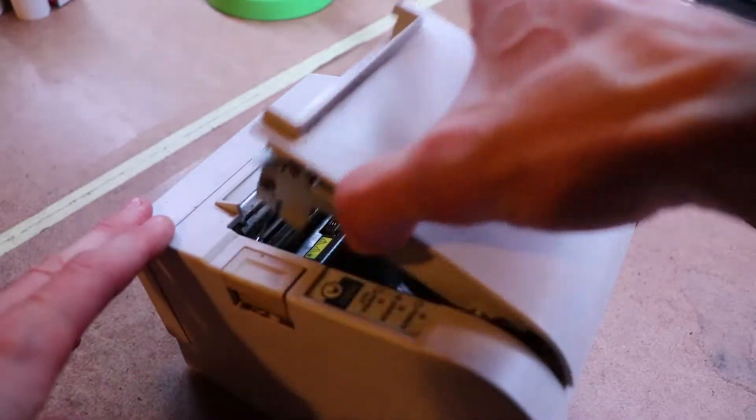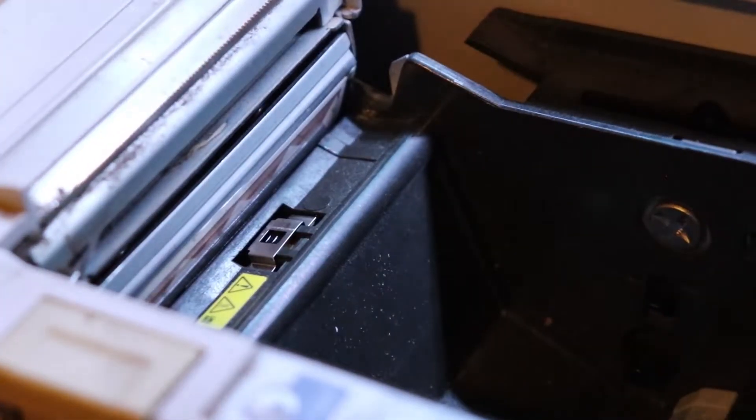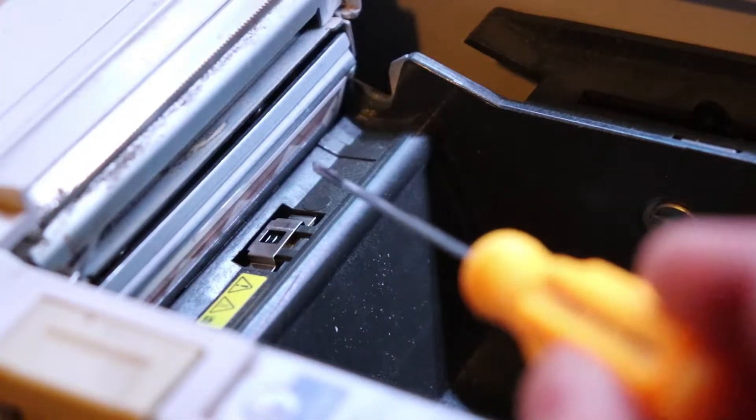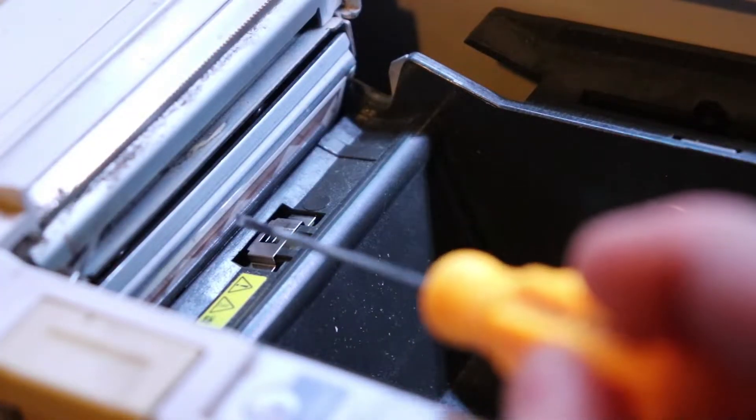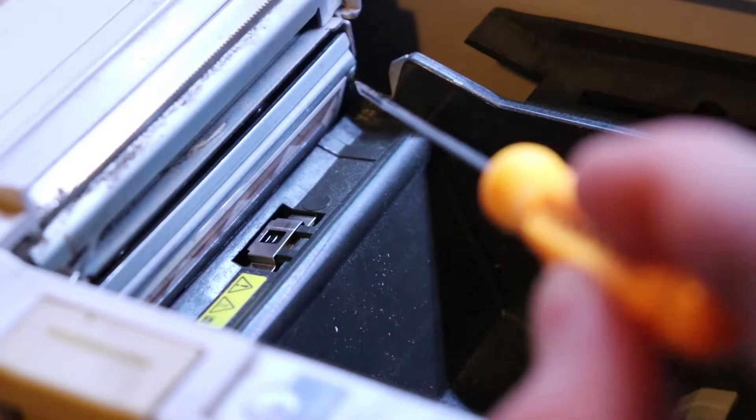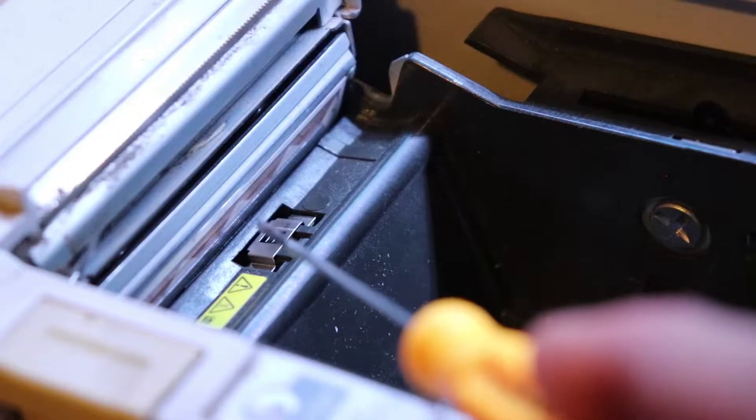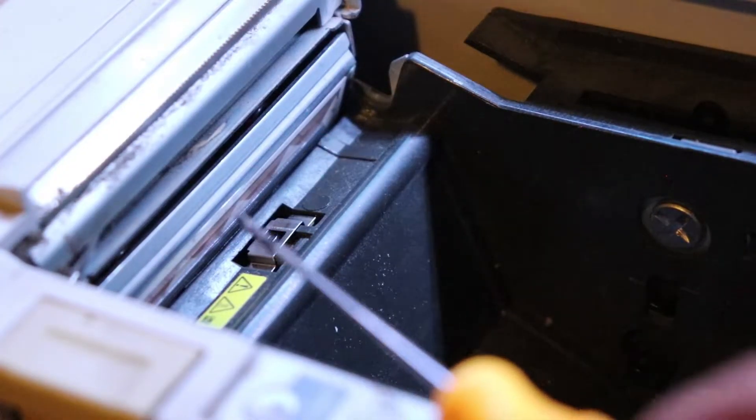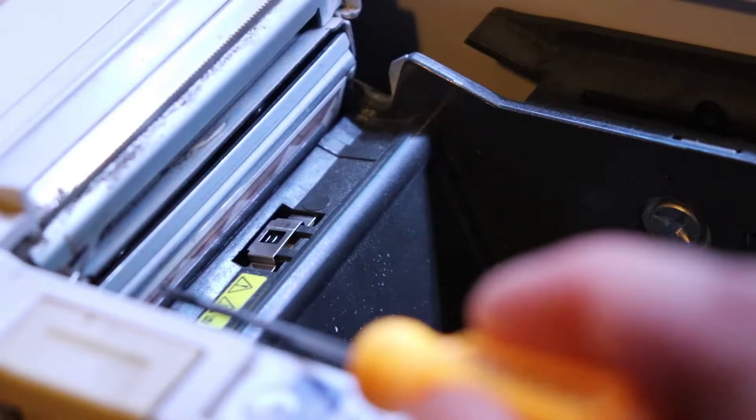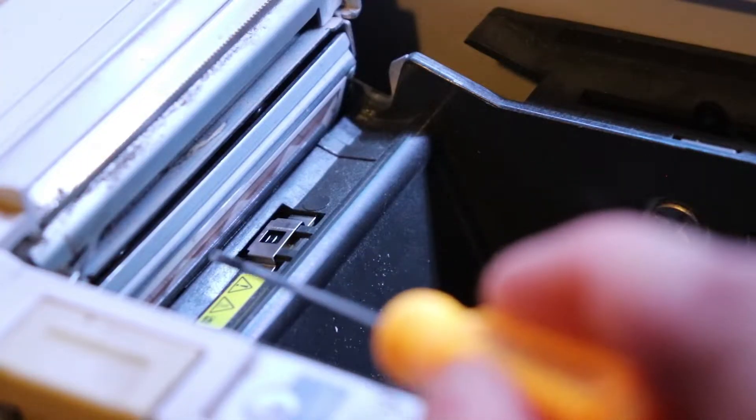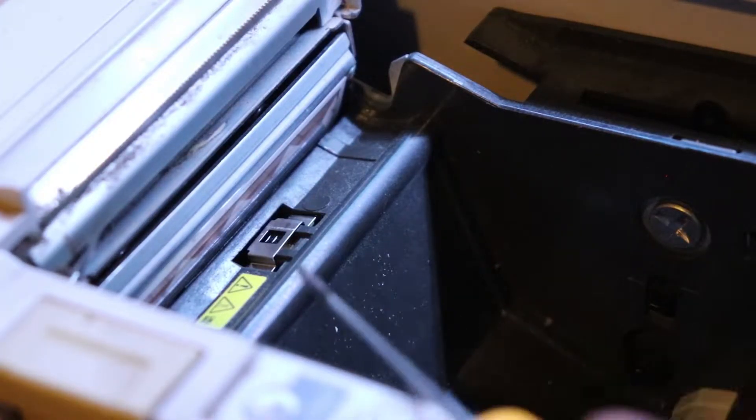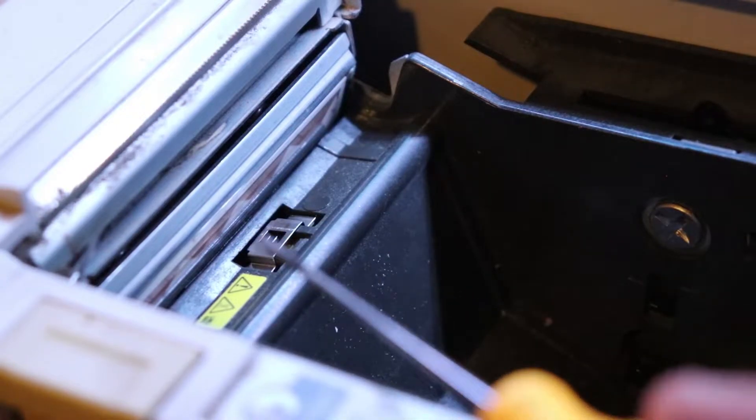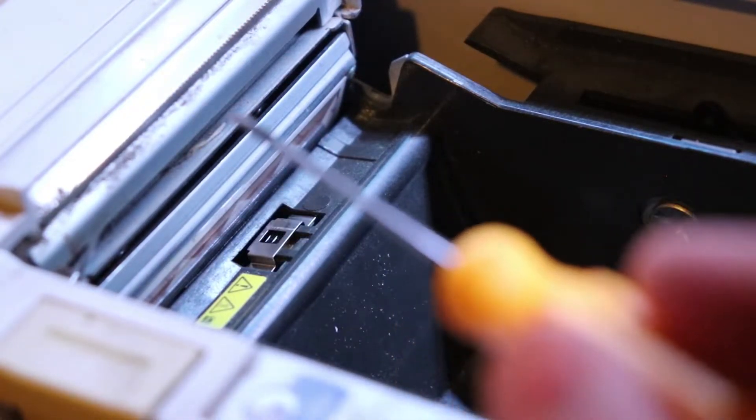Now if we open up the thermal printer you should be able to see and make out this array here. This array is a resistive array that heats up the paper and that's how the thermal printer actually prints. The thermal printer controls very precisely a series of heating elements in this array and it heats up the paper in a very precise way. And that's how you get pixels or letters or images on the paper.